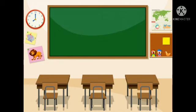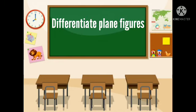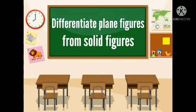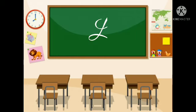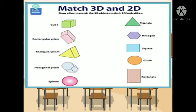In this session, you'll learn to differentiate plain figures from solid figures. Let's start! Match 3D and 2D objects by drawing a line to match the 3D objects to their 2D lookalikes. We have the first 3D object, which is a cube. What is its 2D lookalike? Correct! It is a square.